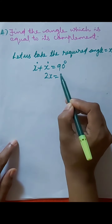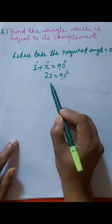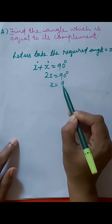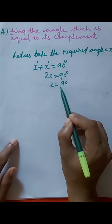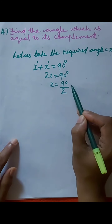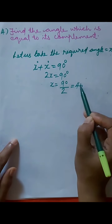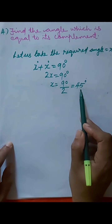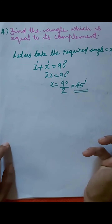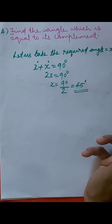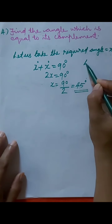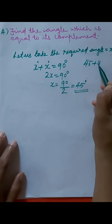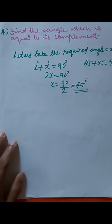2x equals 90 degrees, so x equals 90 divided by 2. We get 45 degrees. Thus, the required angle is 45 degrees. Check: 45 plus 45 equals 90 degrees — the angles are complementary.